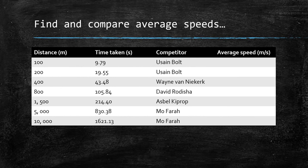I would like you to pause the video and practise finding average speed for all of these different competitors across different events. Here are all the answers — hopefully that was pretty straightforward and you got all of those correct. It's a key skill that you will need to know for the exam. I've seen lots of exam questions in past papers where they've asked you to calculate average speeds and analyse them.